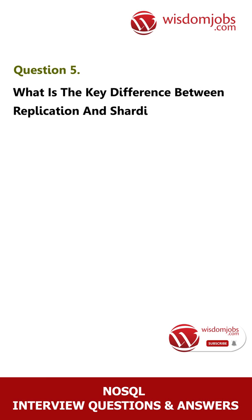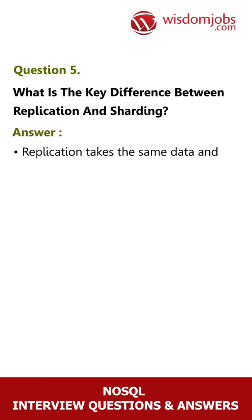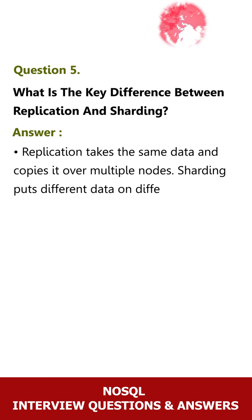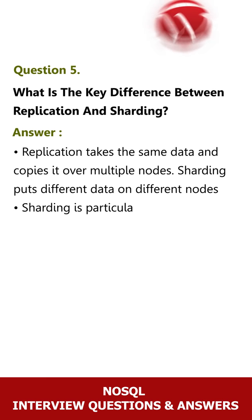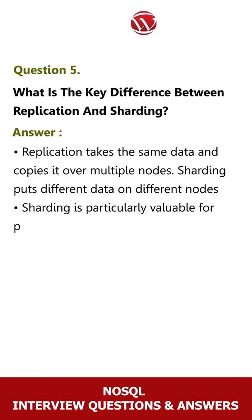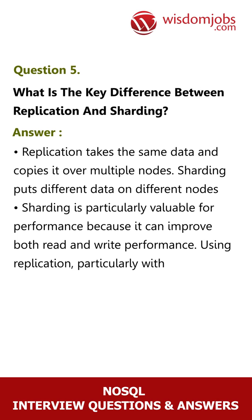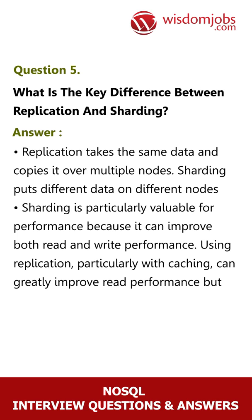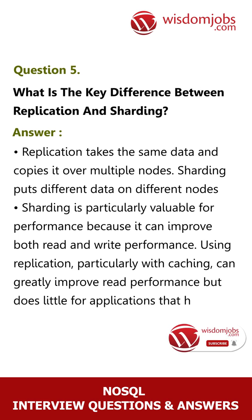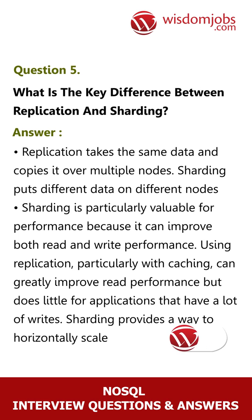Question 5: What is the key difference between replication and sharding? Answer: Replication takes the same data and copies it over multiple nodes. Sharding puts different data on different nodes. Sharding is particularly valuable for performance because it can improve both read and write performance. Using replication, particularly with caching, can greatly improve read performance but does little for applications that have a lot of writes. Sharding provides a way to horizontally scale.